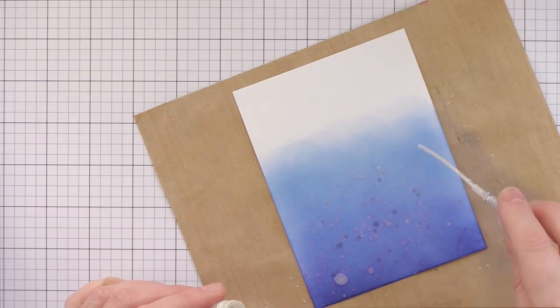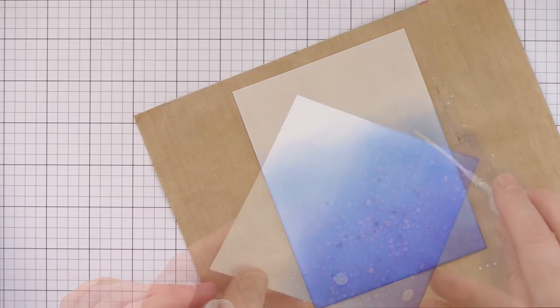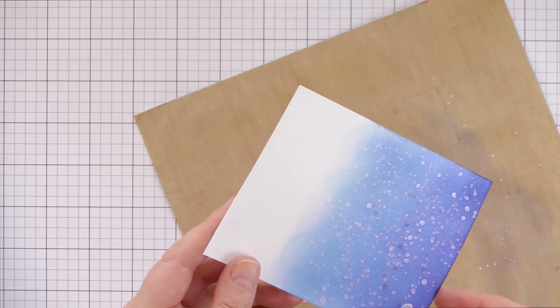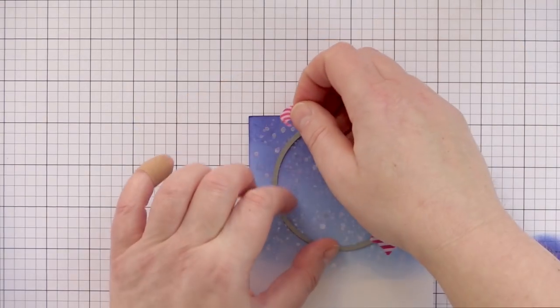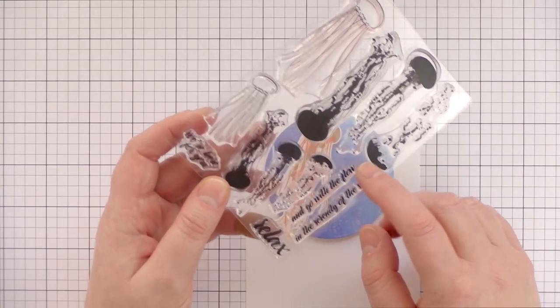And then you take the tube from inside the Mini Mister and use that to splatter the sparkling mixture onto your card. If I turn the card, I hope you can see how the perfect pearls really catch the light and sparkle. I'm going to die cut a circle from the ink blended piece, and then the only thing left to sort out is the sentiment for this card.